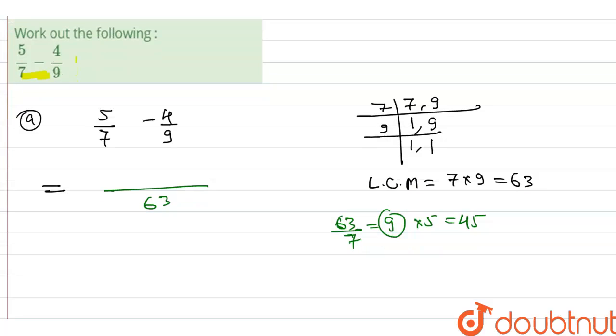This is the process for each and every question. When we will get any question of fraction and LCM both together, then we will do the same process. First of all, we will divide the LCM by denominator. Then what we will get, that we will multiply into numerator. I have done the same process.